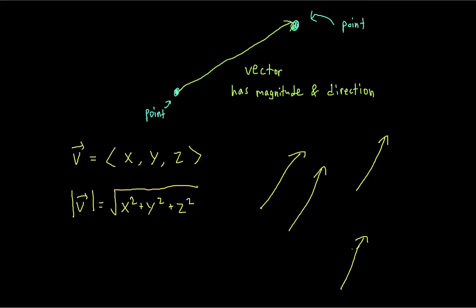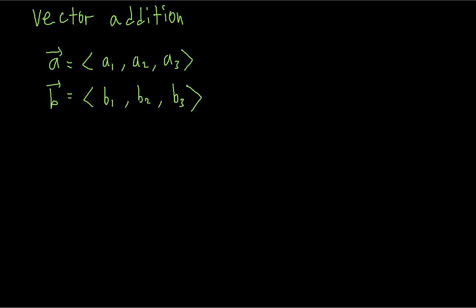One of the important operations for vectors is vector addition. This is one of the operations that defines what a vector is. If we have two vectors, then we can add the vectors to get a new vector. The components of this new vector will just be the sum of the corresponding components of the original vectors.